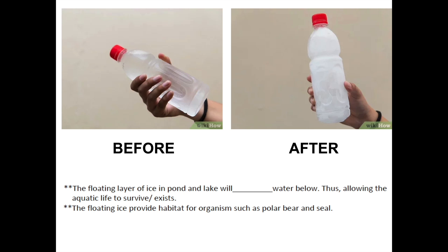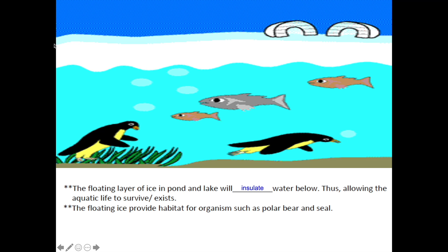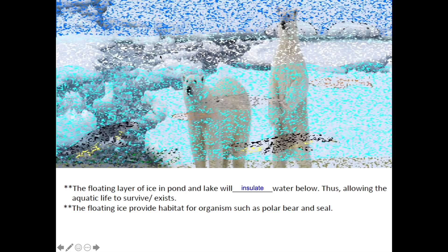What are the important implications of this property? Because water is not at its densest form when it turns solid, solid water floats in liquid water. Since ice floats, a floating layer of ice on a pond or lake in winter will insulate the water below. Due to exposure to cold temperatures, the surface of the water turns to ice, forming a layer on top of the lake that insulates the water below from the weather, protecting it from also turning to ice, and thus allowing the aquatic ecosystem to exist in winter. Secondly, the floating ice also provides habitat for organisms such as polar bears and seals.